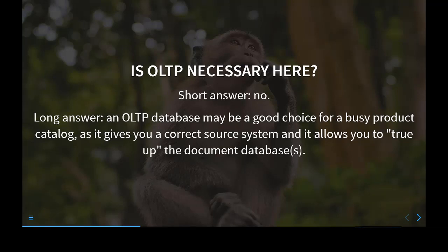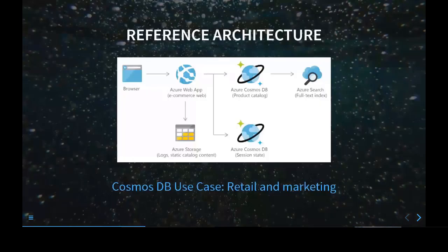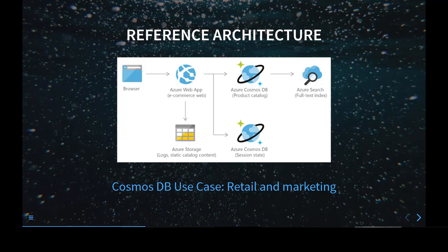This also lets you true up your document databases. It's not really a problem if customers in Brazil see a slightly different description than German customers for a moment. But if that persists for hours or days, or price changes are not adequately updated, that can be a problem. So we want a system to true up a document database. For reference architecture, here is one Azure example: using Azure Cosmos DB for the product catalog, building a full-text index using Cognitive Search, and displaying it on an Azure web app.